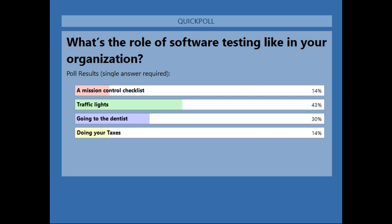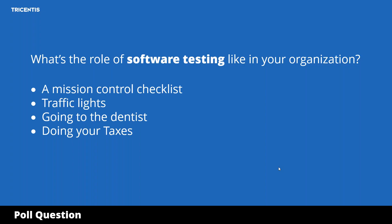The results are: 43% answered traffic lights, 30% answered going to the dentist, and 14% each listed mission control checklist and doing your taxes. So the best and the worst both got 14%. That's kind of what I would expect — it hovers in the middle. The concept of continuous delivery and deployment gets us into a much different scenario where you really want to get to that mission control checklist. Thank you, audience, for participating — great participation in the poll questions.